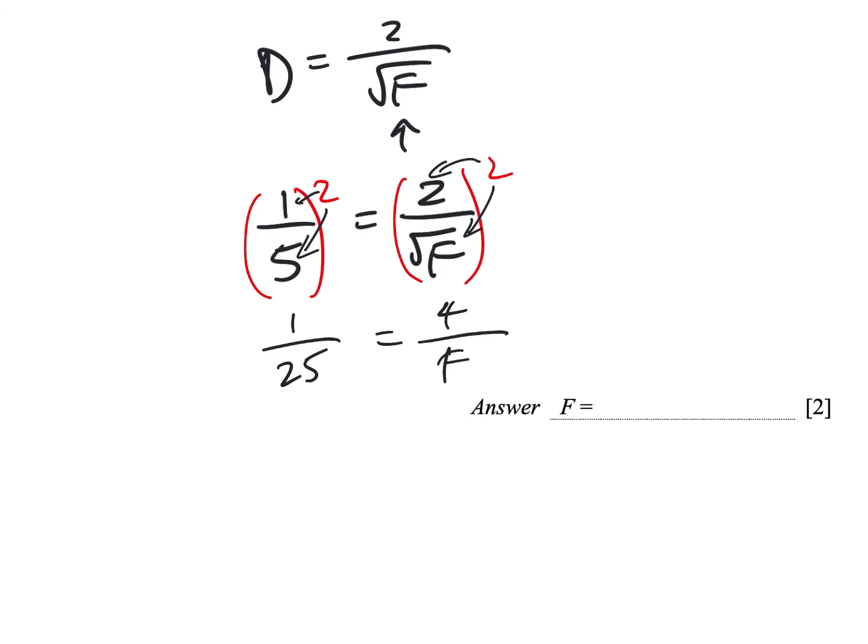Okay, this looks a little bit better, and so let's multiply F on both sides, and they cancel, so F over 25 equals to 4, and then now we just multiply 25 on both sides, so they cancel, equals to 100, and there you go.